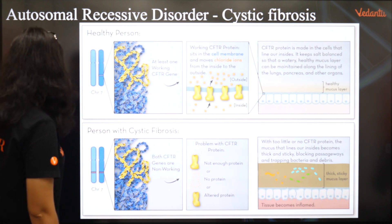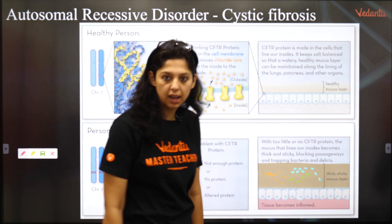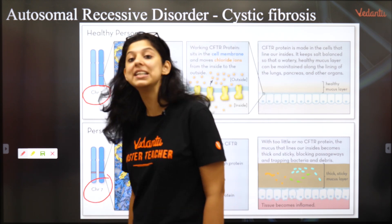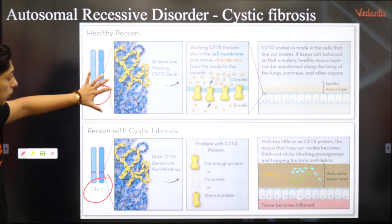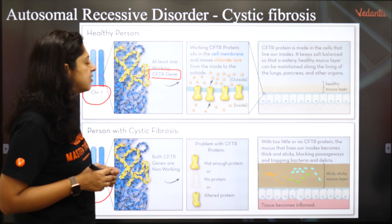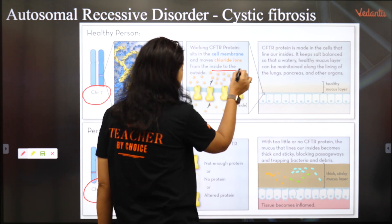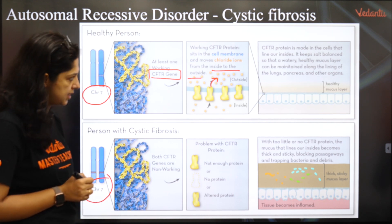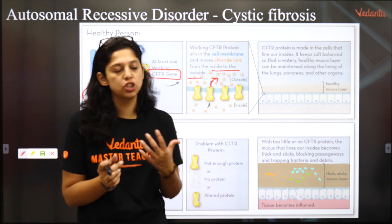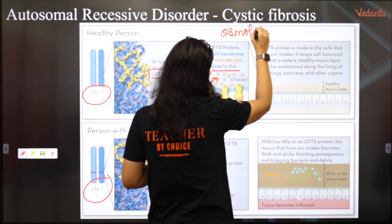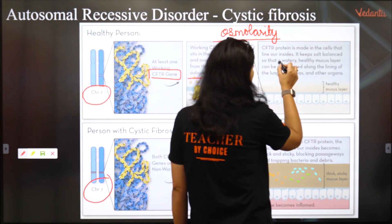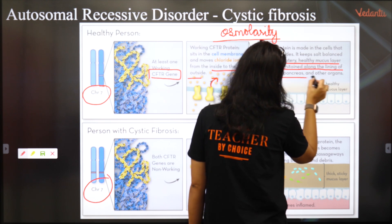Cystic fibrosis is an autosomal recessive disorder. In the MCQ context, the relevant gene is on chromosome number seven. A healthy person has at least one working CFTR gene. The CFTR protein sits in the cell membrane and moves chloride ions from the inside to the outside. This protein, made in cells lining the organs, keeps salt balance so that a watery, healthy mucus layer can be maintained along the lining of the lungs, pancreas, and other organs.